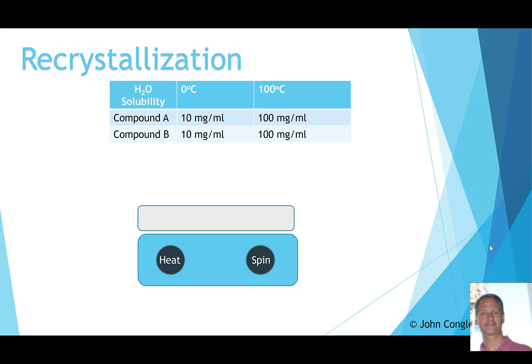Let's look at an example with two compounds, A and B, using water for recrystallization. At 0 degrees Celsius, both compounds have the same solubility: 10 milligrams dissolves in 1 milliliter. At 100 degrees Celsius — boiling for water — 100 milligrams of each compound will dissolve in 1 milliliter of water.